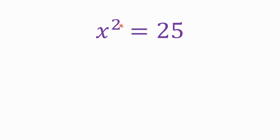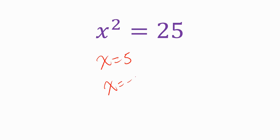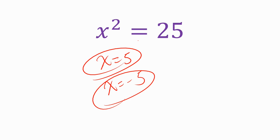We have x squared equals 25. You can probably solve this one in your head. What are the two numbers where, when we square them, we get 25? Some number times itself equals 25. The first one you probably think of is 5, because 5 times 5 is 25. But what's the other one? It's negative 5, because negative 5 times negative 5 equals 25. So we have two solutions: x equals 5 and x equals negative 5.